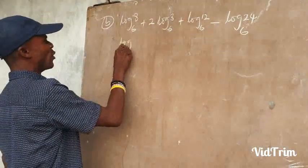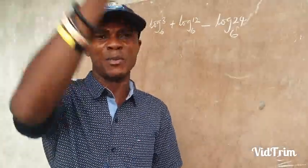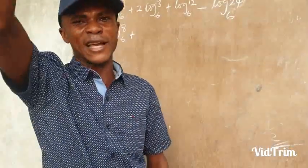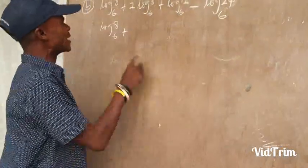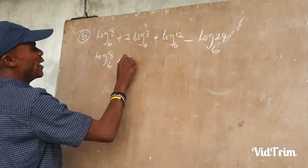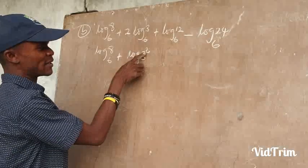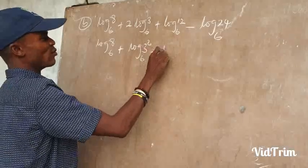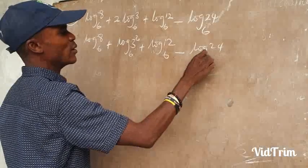Starting with log 8 base 6 plus... There was a theorem that says if there is a power, you drop it down; and if something is in front, you take it up. So this 2 in front of the logarithm goes up as a power. It becomes log of 3 to the power of 2, base 6, plus log of 12 base 6, minus log of 24 base 6.